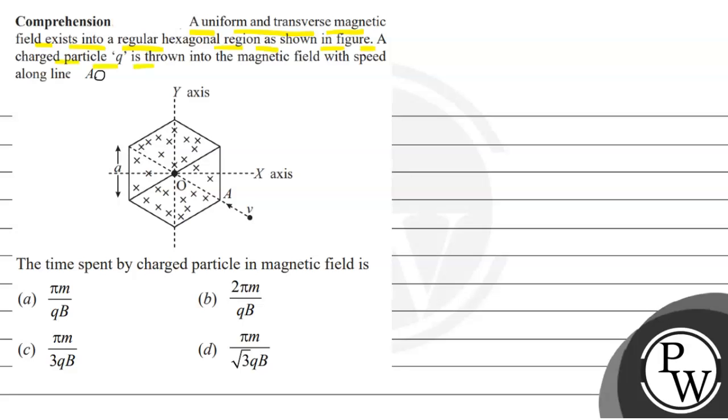A charge particle Q is thrown into the magnetic field with speed along line AO. The time spent by charge particle in magnetic field is: pi m upon qb, 2 pi m upon qb, pi m upon 3 qb, pi m upon root 3 qb. We have to choose the correct option.